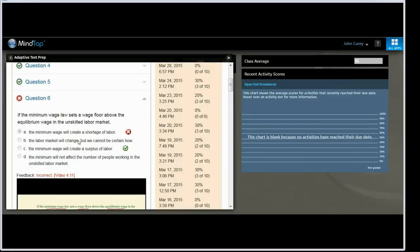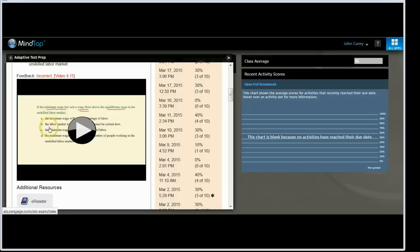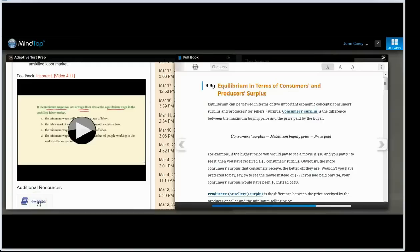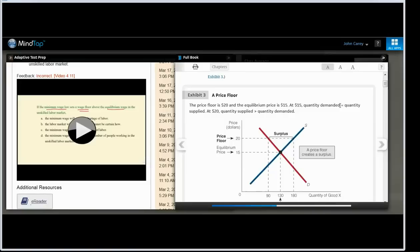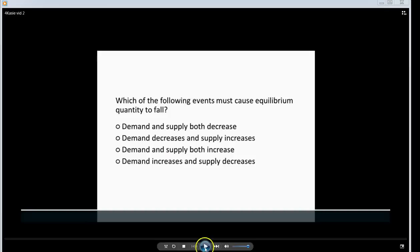Students can click on any question that they got wrong and see what they got wrong. Then there is this remediation video, which is only about a minute, minute and a half long. And then if they click on the e-reader here, it will take them to the place in the text where that question is drawn from.